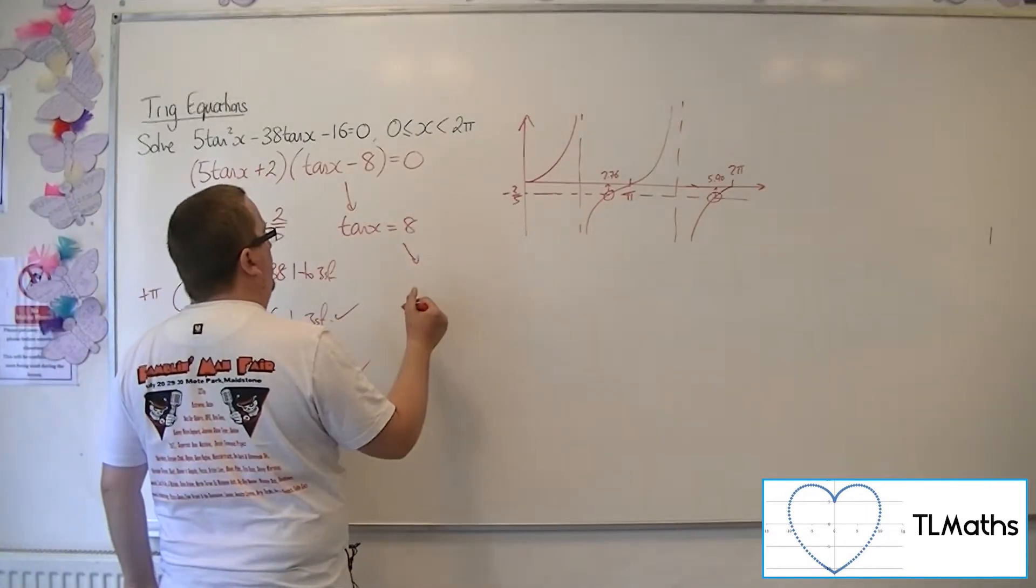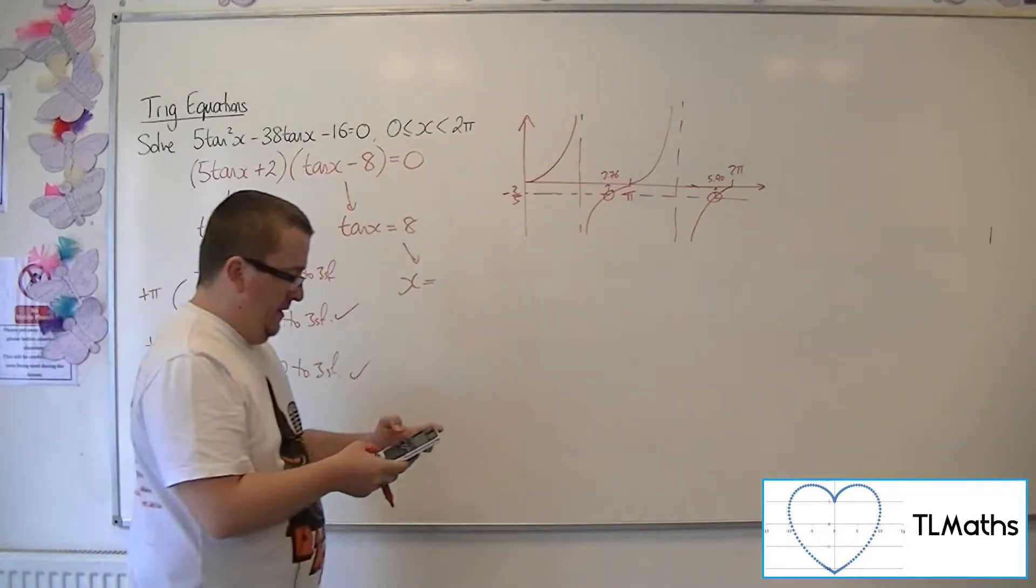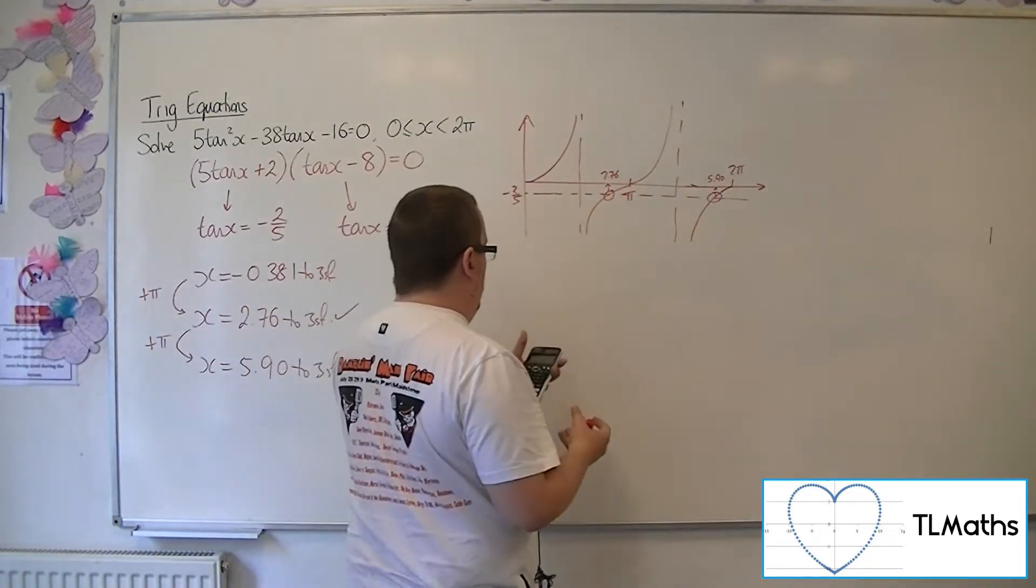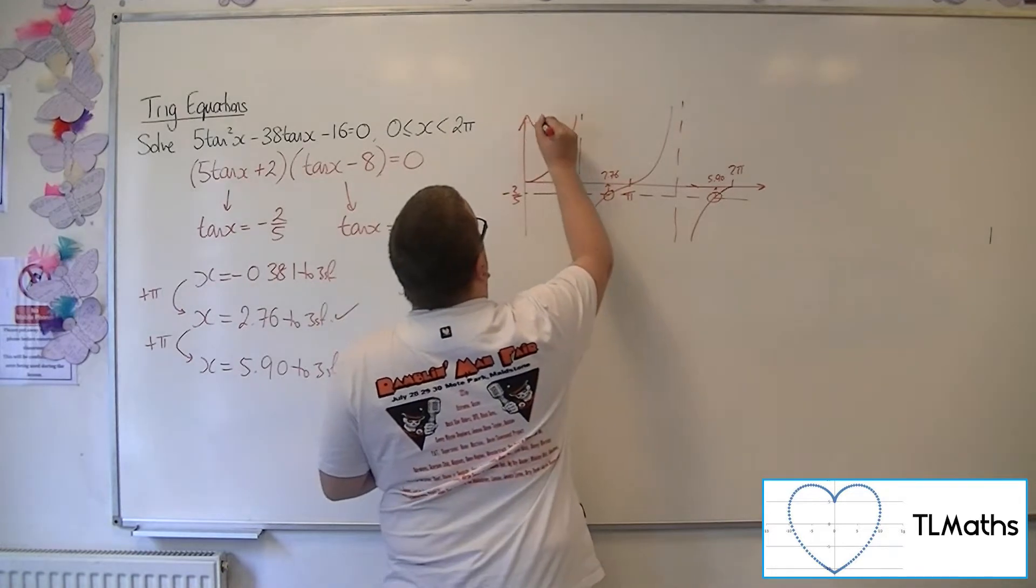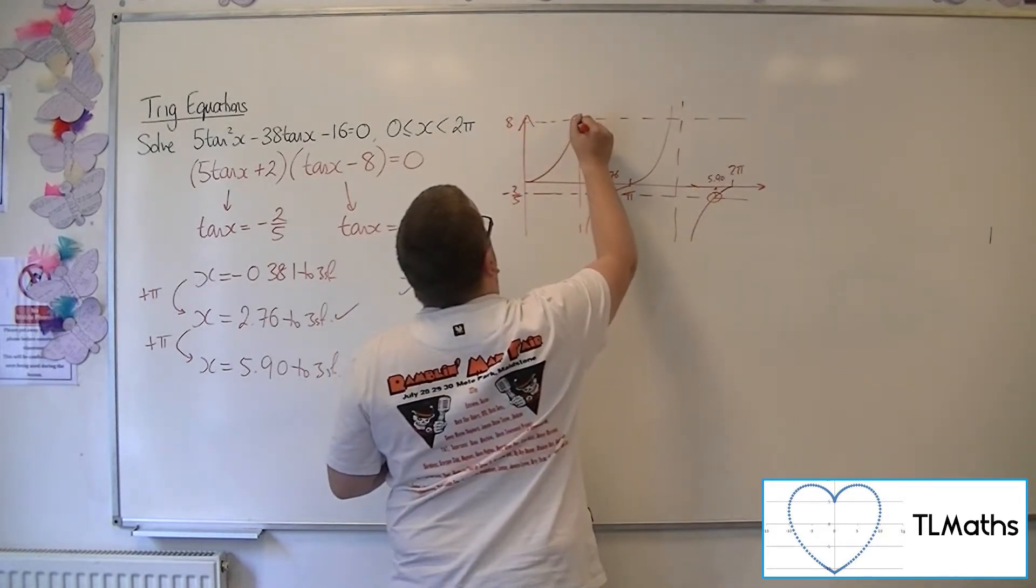Now as for tan x equals 8, if I do inverse tan of 8, I get 1.45. Now 8 is going to be like way up here. So there are two solutions.